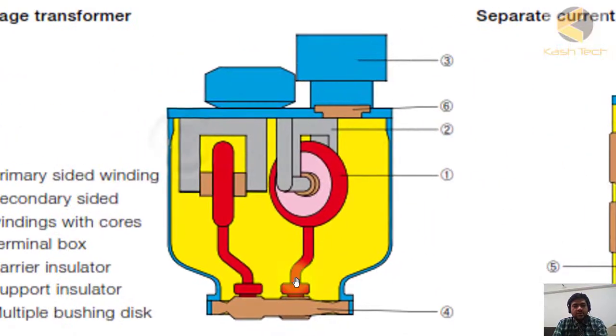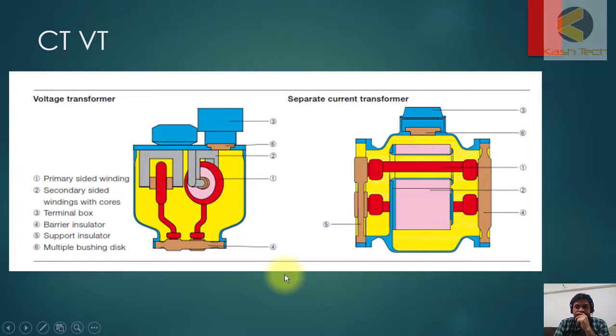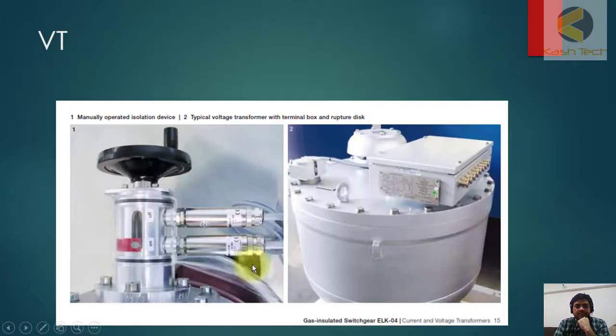This is an example of CT and VT. You can see number two is the secondary winding. Primary winding is a single turn which is the conductor going through this. Here we have shown an actual VT which is installed in the GIS. This is the terminal block you can see.